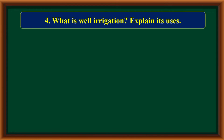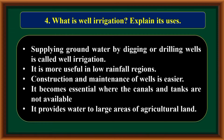Supplying groundwater by digging or drilling wells is called well irrigation. It is more useful in low rainfall regions. Construction and maintenance of wells is easier. It becomes essential where canals and tanks are not available, and it provides water to large areas of agricultural land.